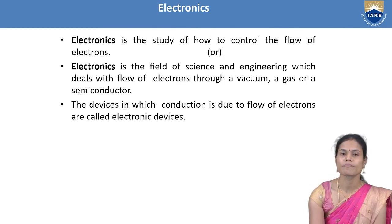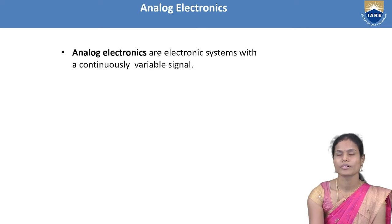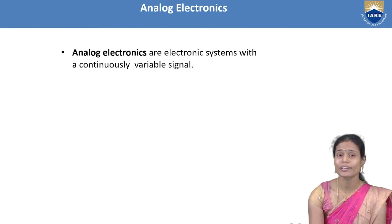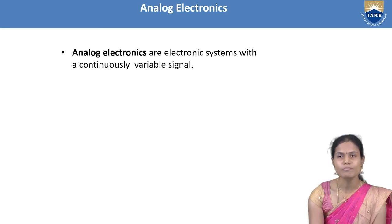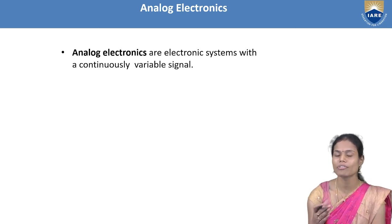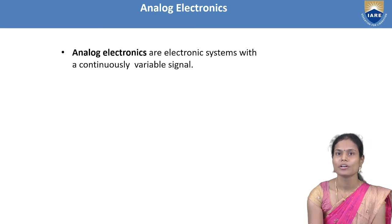Devices in which conduction is due to the flow of electrons are called electronic devices. Analog electronics are electronic systems with a continuously variable signal — for a particular electronic device, we give the input as an analog signal and check the performance of that device.